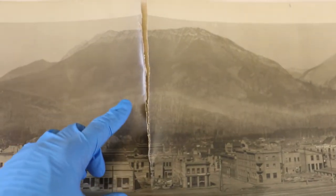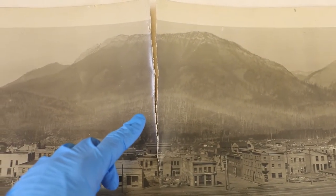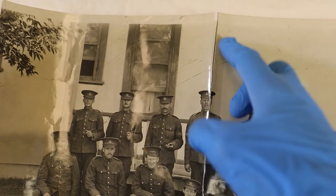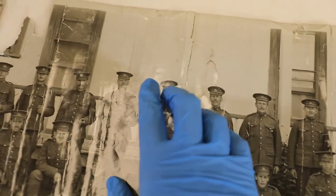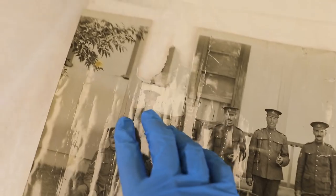As you can see, stress from being tightly rolled has started to form large cracks up the middle of the photograph, which, if left untreated, will eventually split the paper in half. There is also tearing and fragmentation at the edges that need to be repaired.